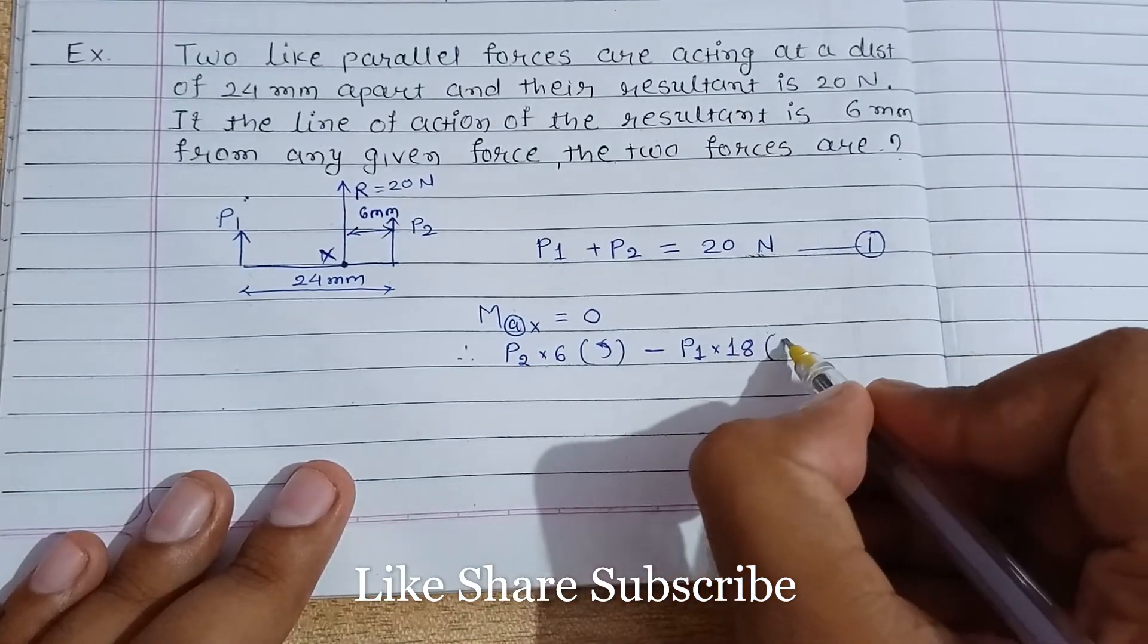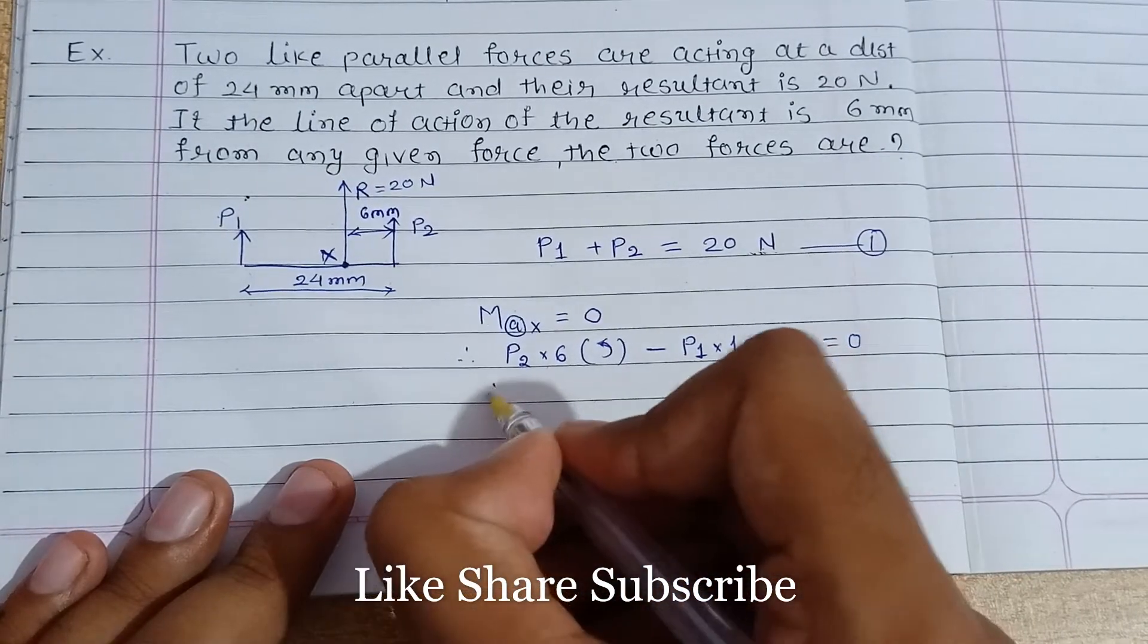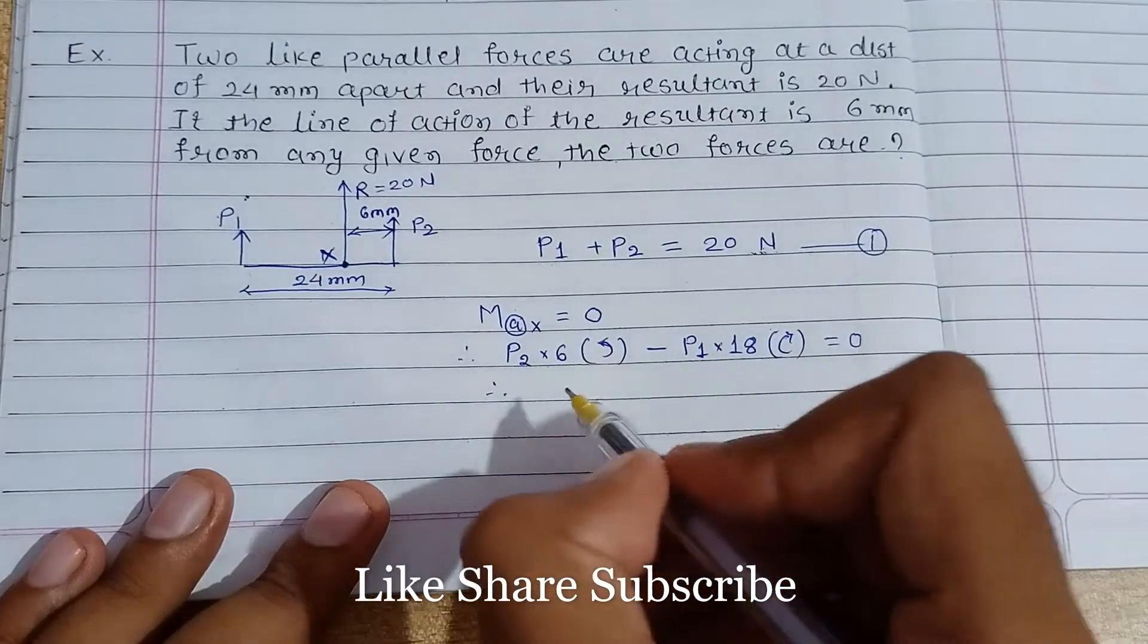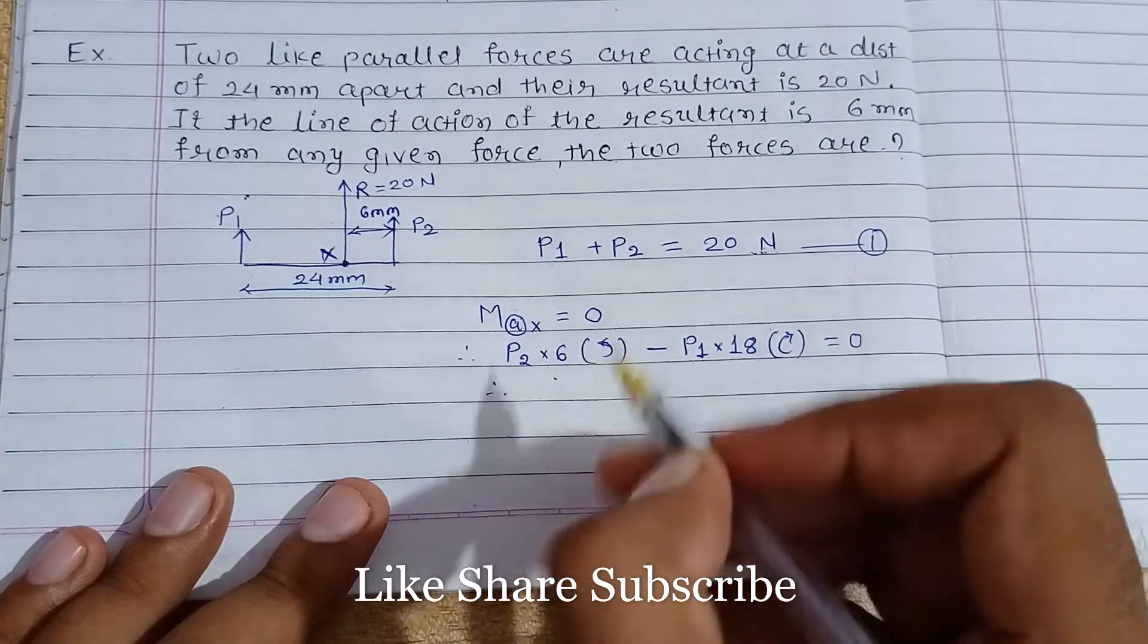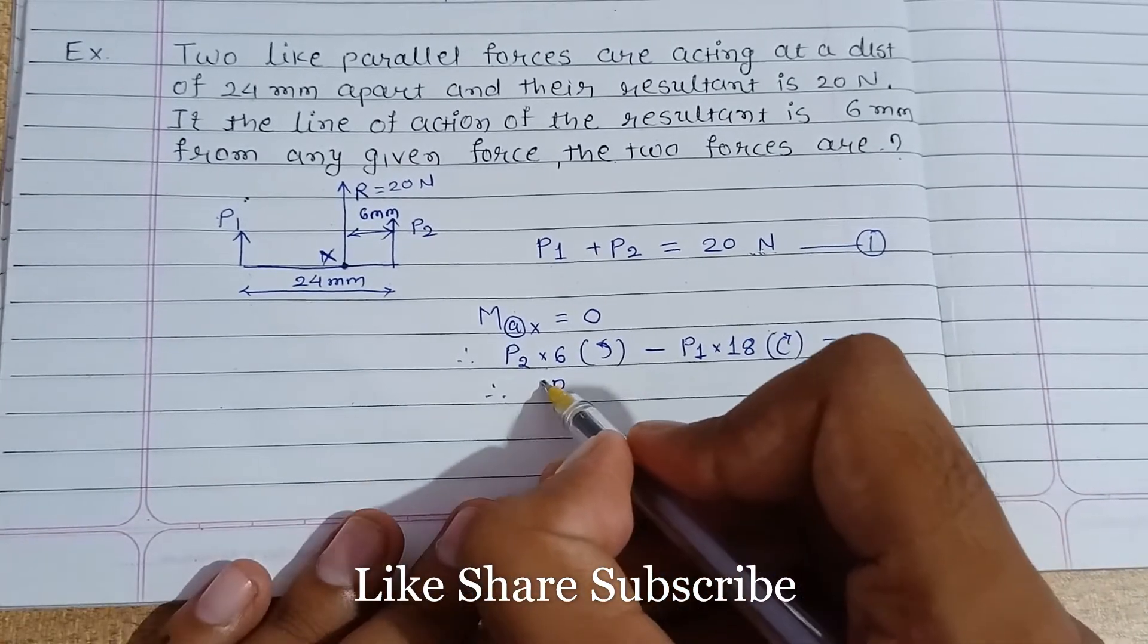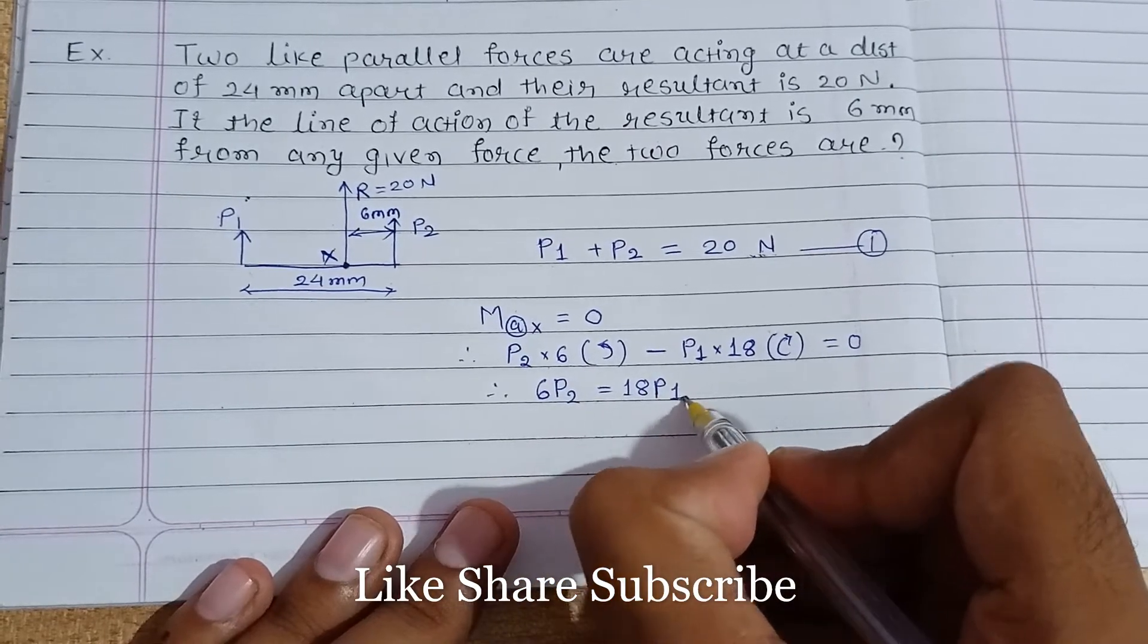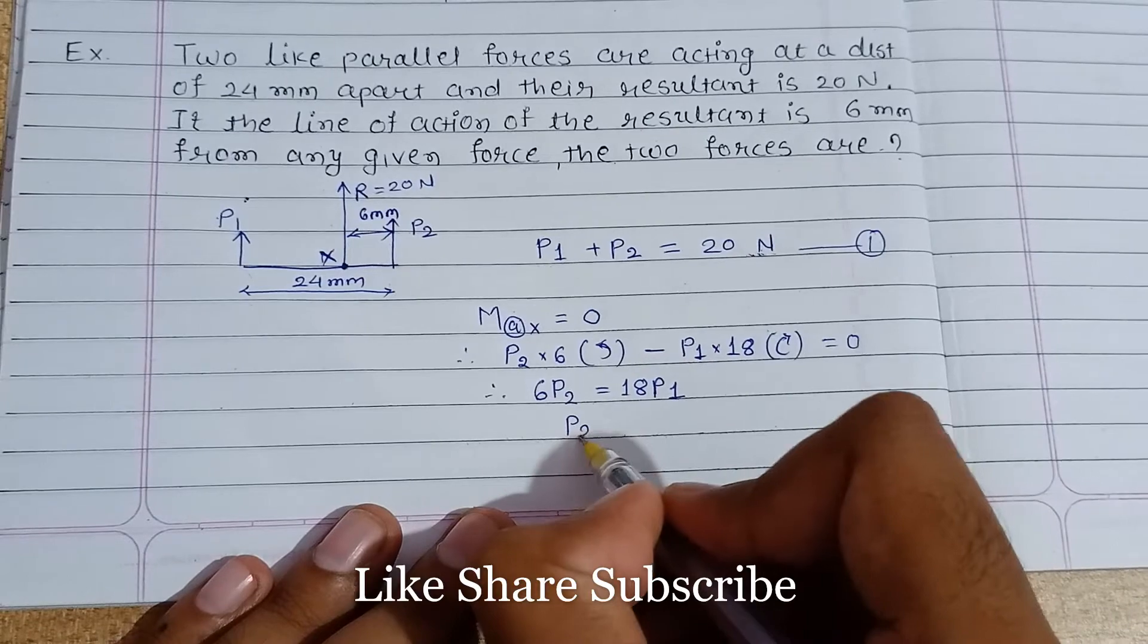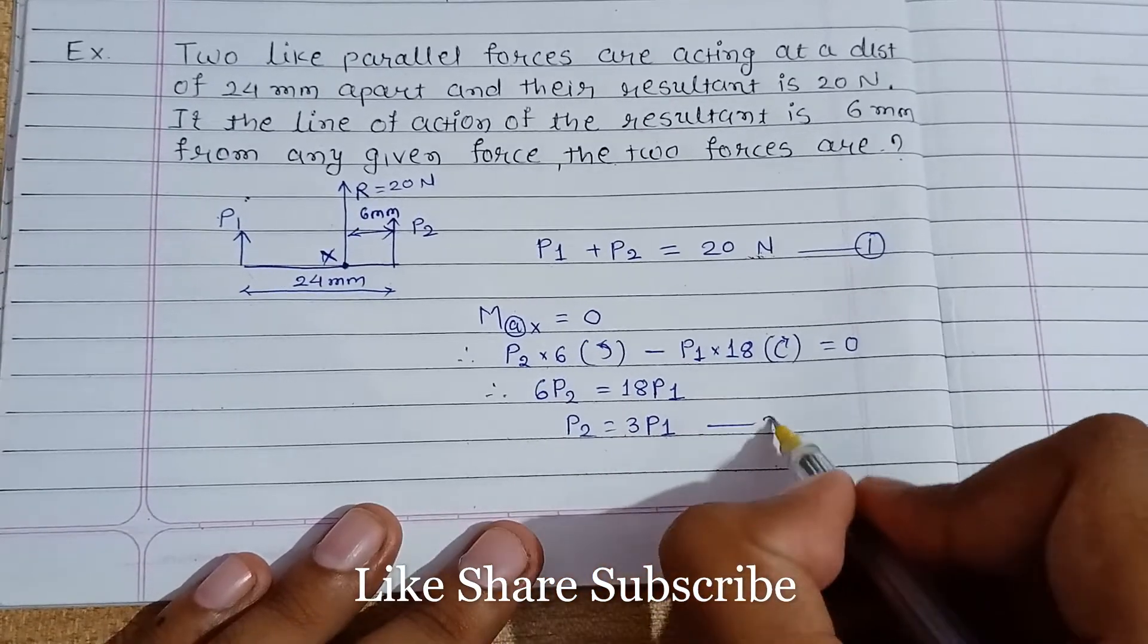So if we simplify this, we get 6P2 is equal to 18P1, and P2 is equal to 3P1. This is our equation number two.